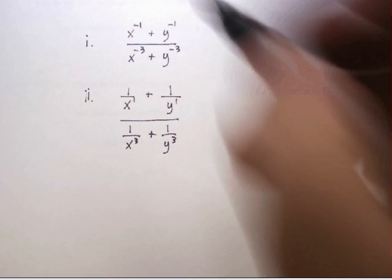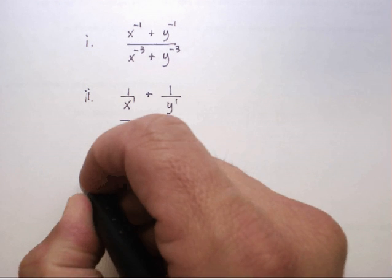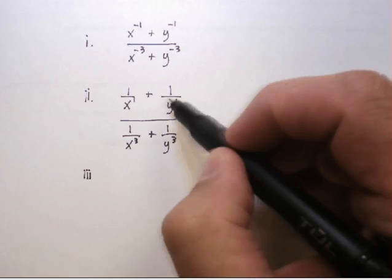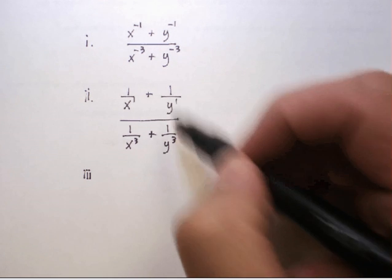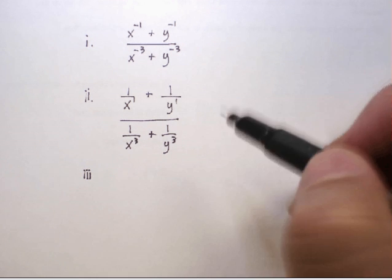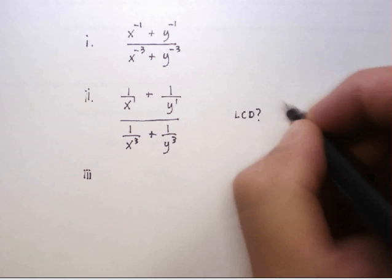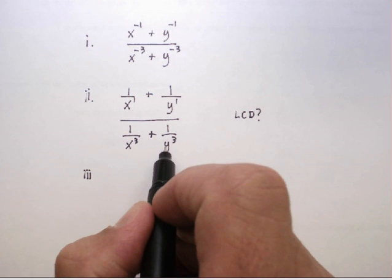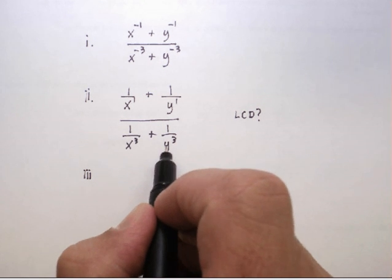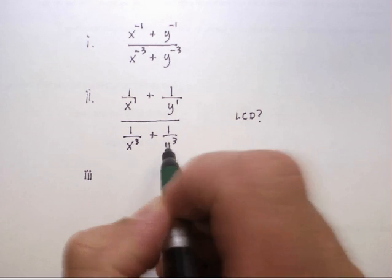Now, if you remember how to do complex rational expressions, one of your goals is to have the same denominator for each one of the four smaller rational expressions. Looking at this, the lowest common denominator for all four of these smaller rational expressions would be x cubed y cubed. So my goal is to make each one of these have that same denominator.